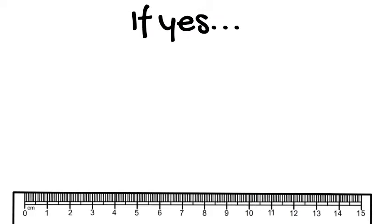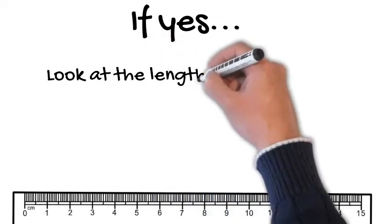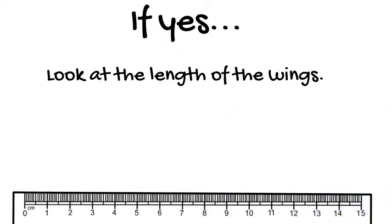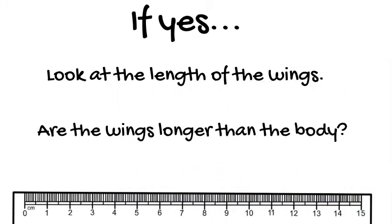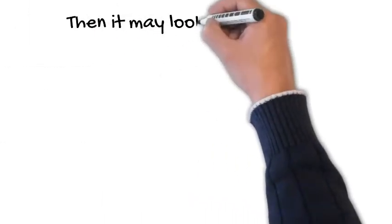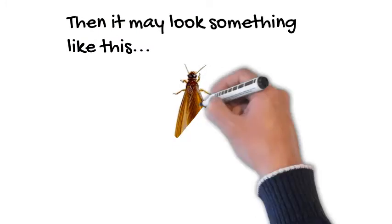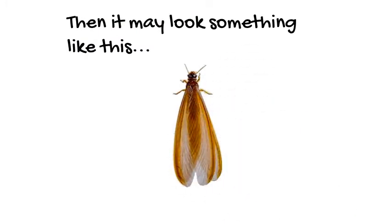If it does, take a look at the length of the wings when compared to the body. Are the wings longer than the body of the specimen? If it is, then it may look something like this. Now yours might be a different color. But does it resemble this?